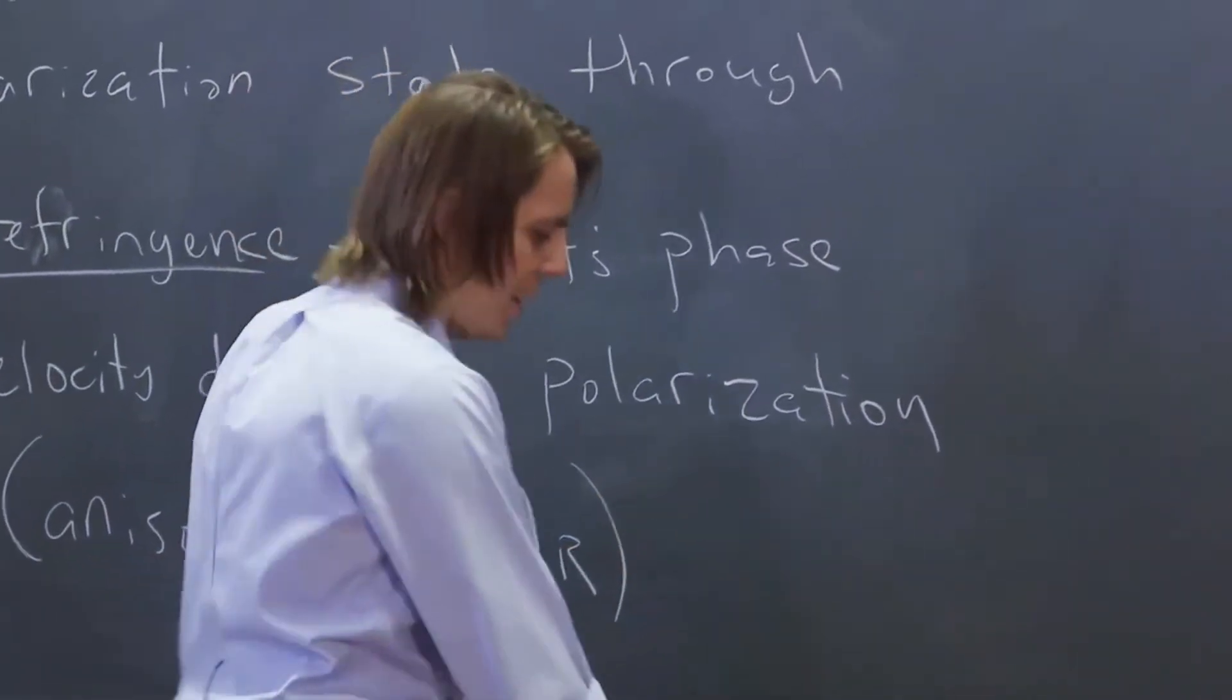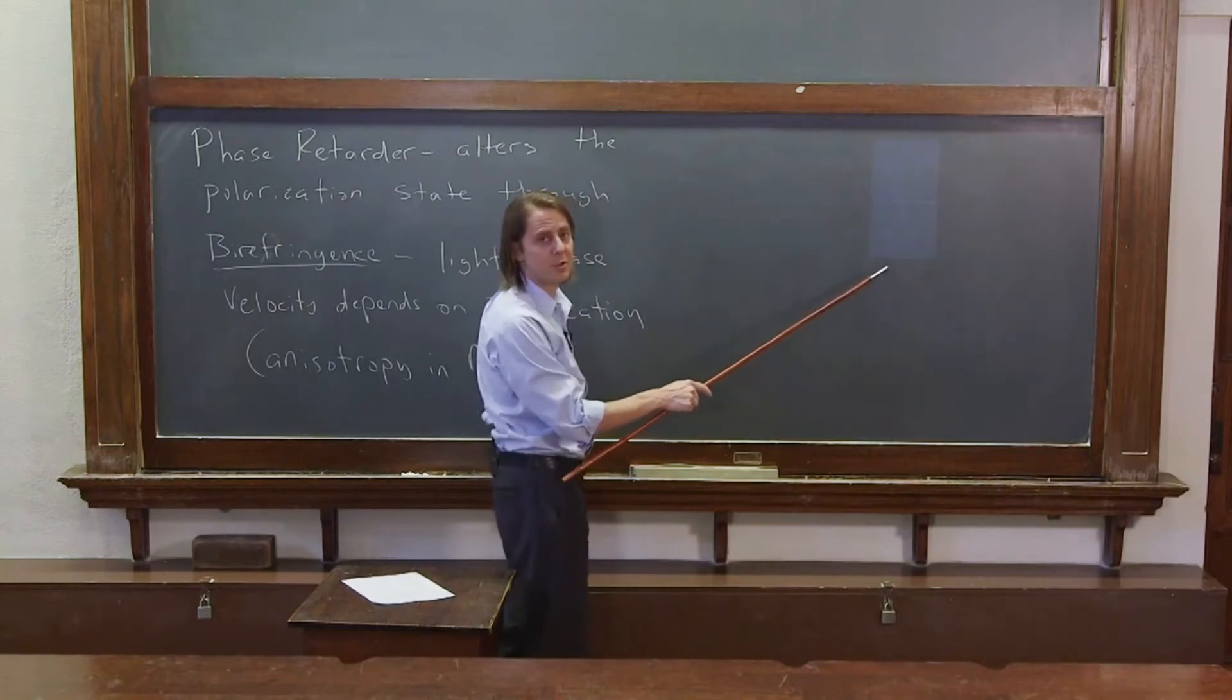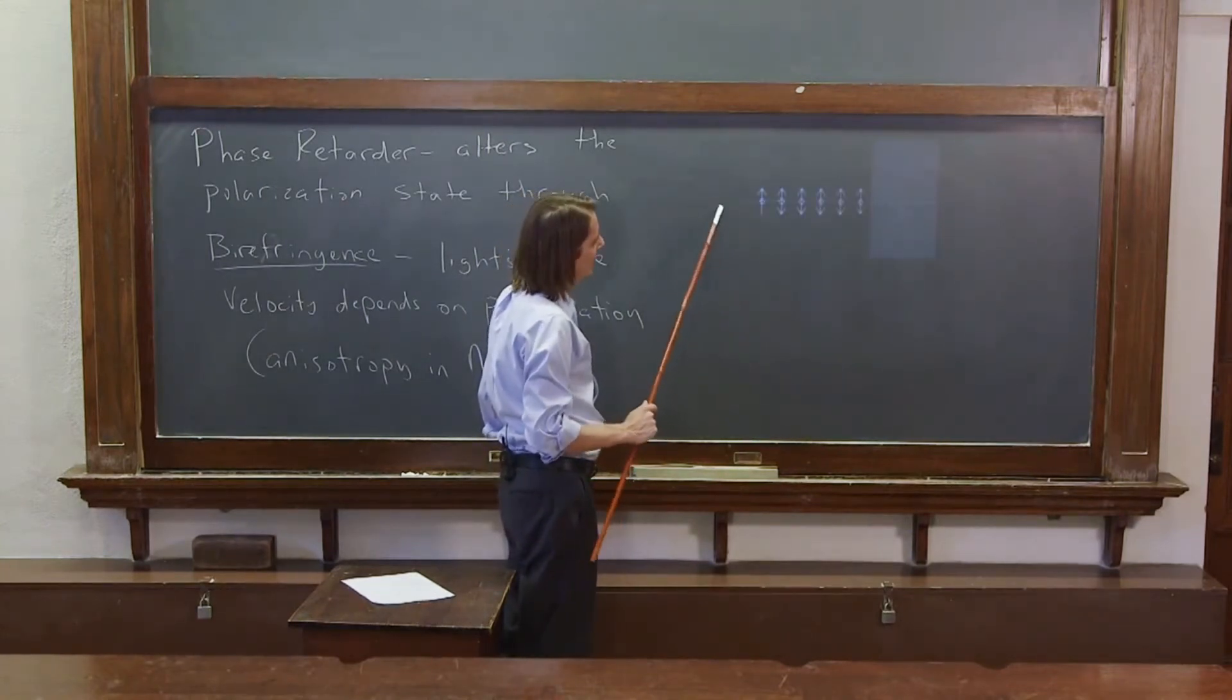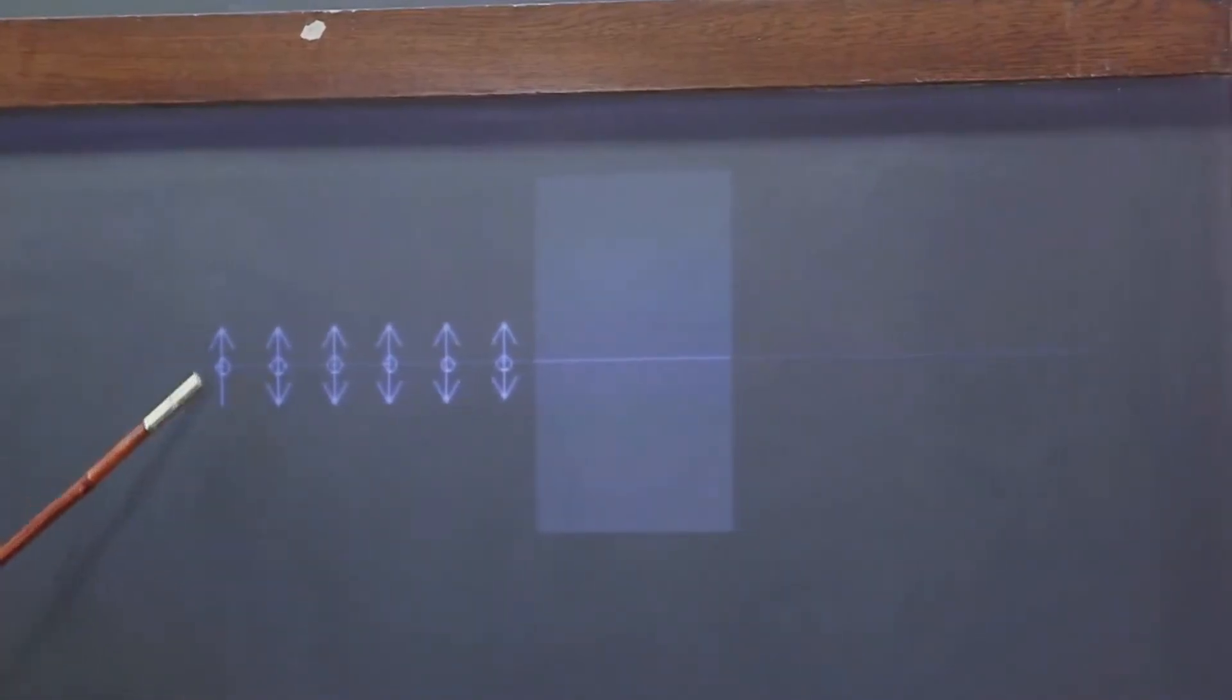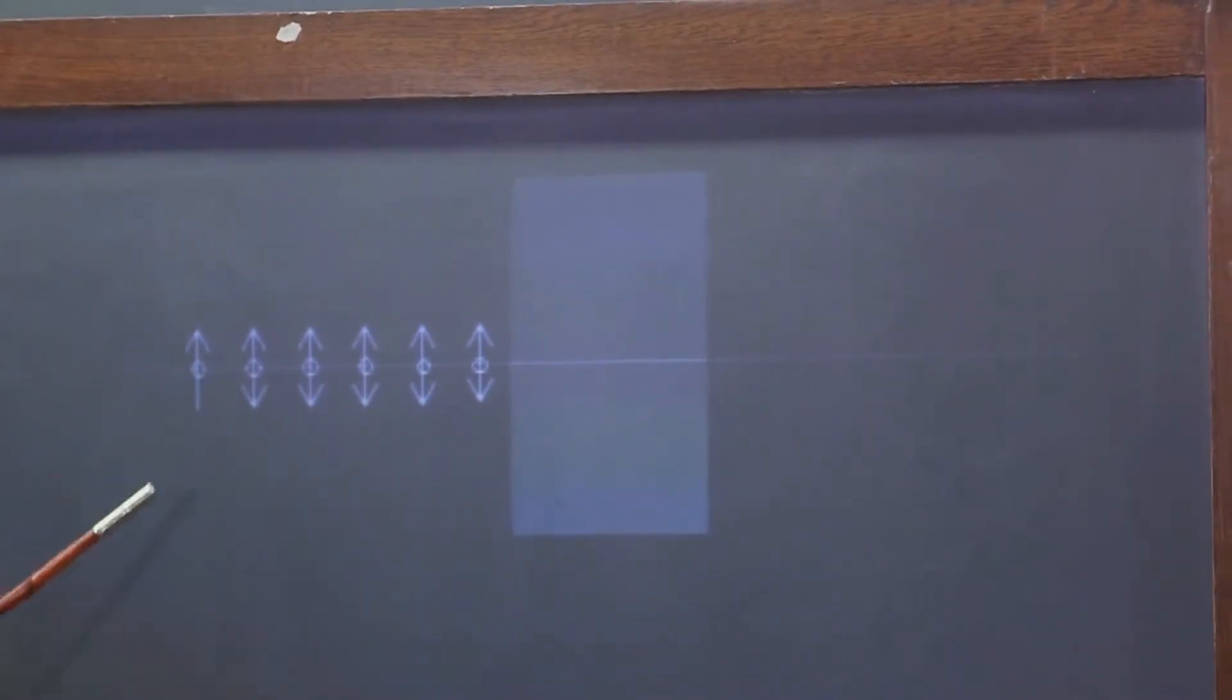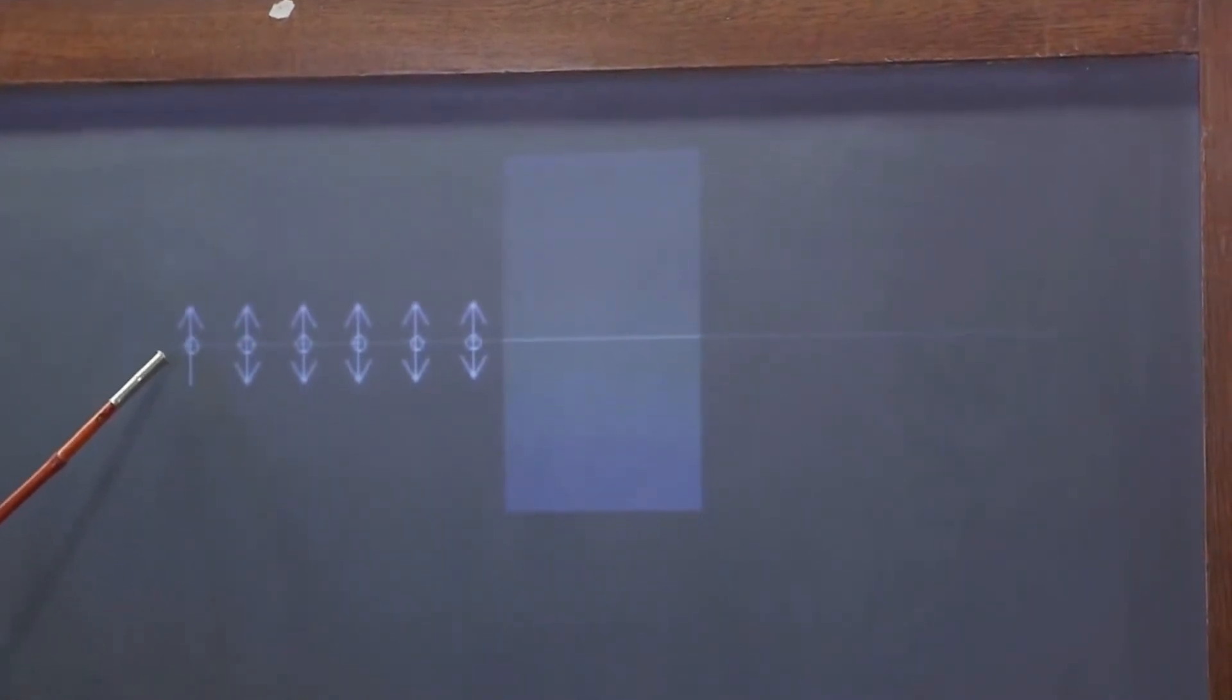Here we have an optical axis, and let's imagine we have some birefringent material right here. Let's have a plane wave of light approach that material. You can see that the up and down arrows are the vertical polarization and the in and out of the board arrows are the horizontal polarization. The way I'm drawing it now, they're equal and in phase.